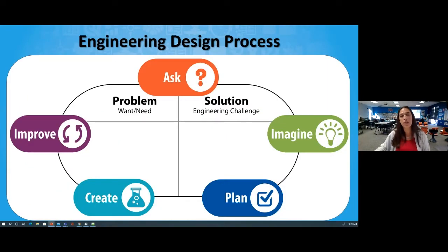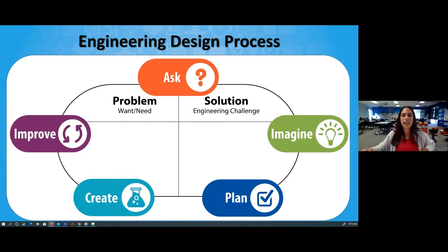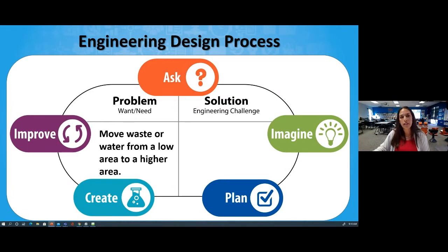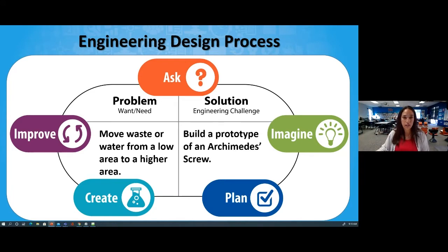To help transform us into wastewater engineers, we will work through the steps of the engineering design process. We'll start off by asking some questions, wondering, imagining some big ideas, planning our model, and then we're going to create it. Finally, we'll add any improvements that might be necessary after we test it. Our problem for today is that we want to move waste or water from a low area to a higher area. Our solution is to build a prototype or a model of our Archimedes screw.